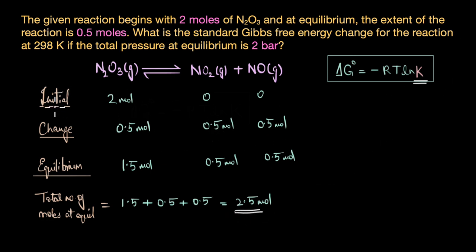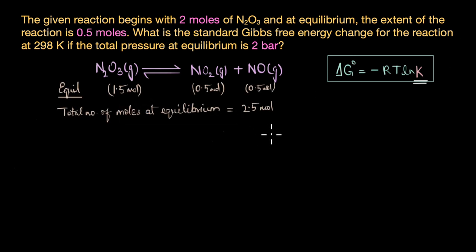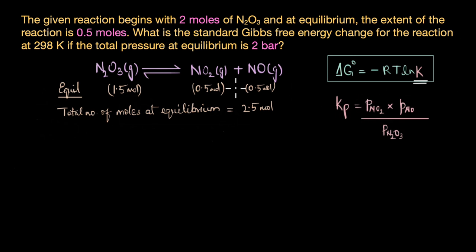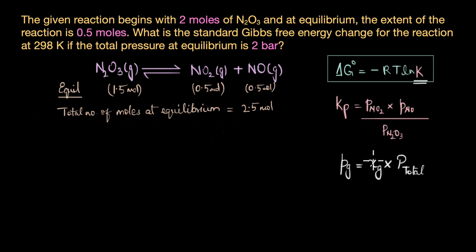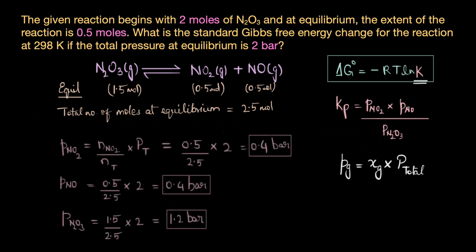Let's write just the equilibrium concentrations. Since we are dealing with gases and the total pressure at equilibrium is given as 2 bar, we will use Kp — the equilibrium constant in terms of partial pressures — rather than Kc, which is in terms of concentrations. The partial pressure of a gas is proportional to its mole fraction, so we can find the partial pressure of each gas using the formula: mole fraction of the gas multiplied by the total pressure.